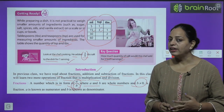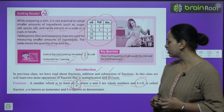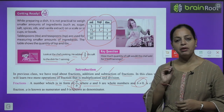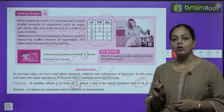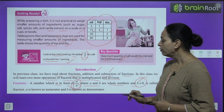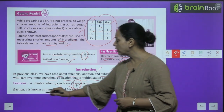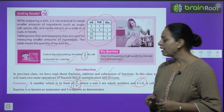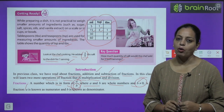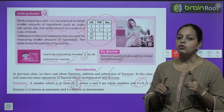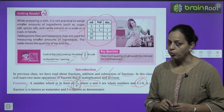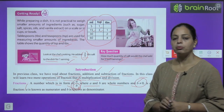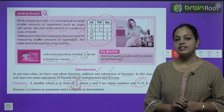Since b is not equal to 0, this is called the fraction. Here, a is the numerator and b is the denominator. Jo upar hota hai that is numerator, aur jo neeche number hota hai usko hum bolte hain denominator. I hope you know these basic things.